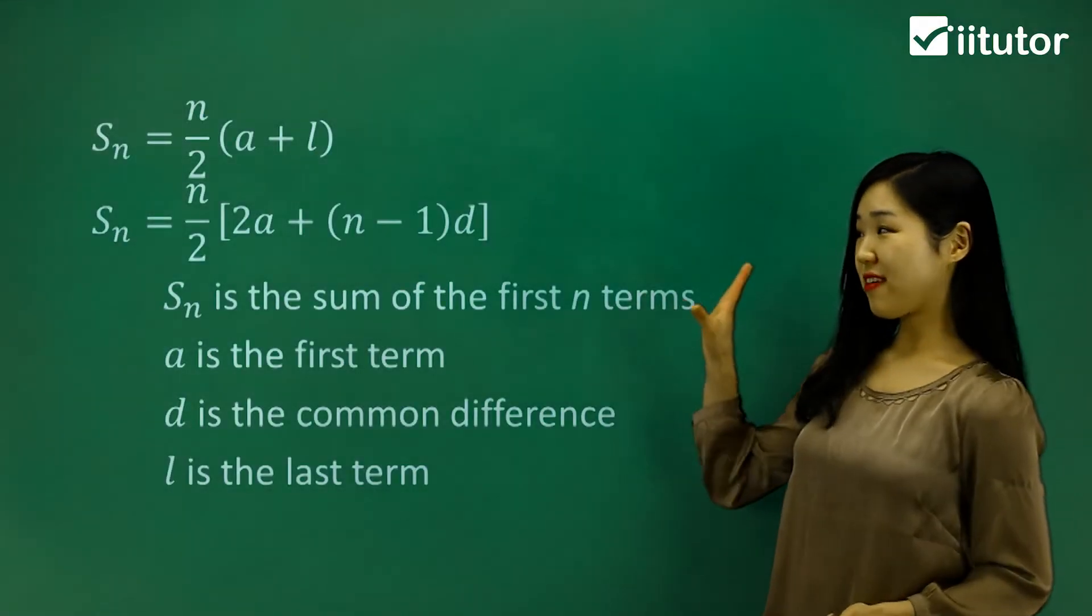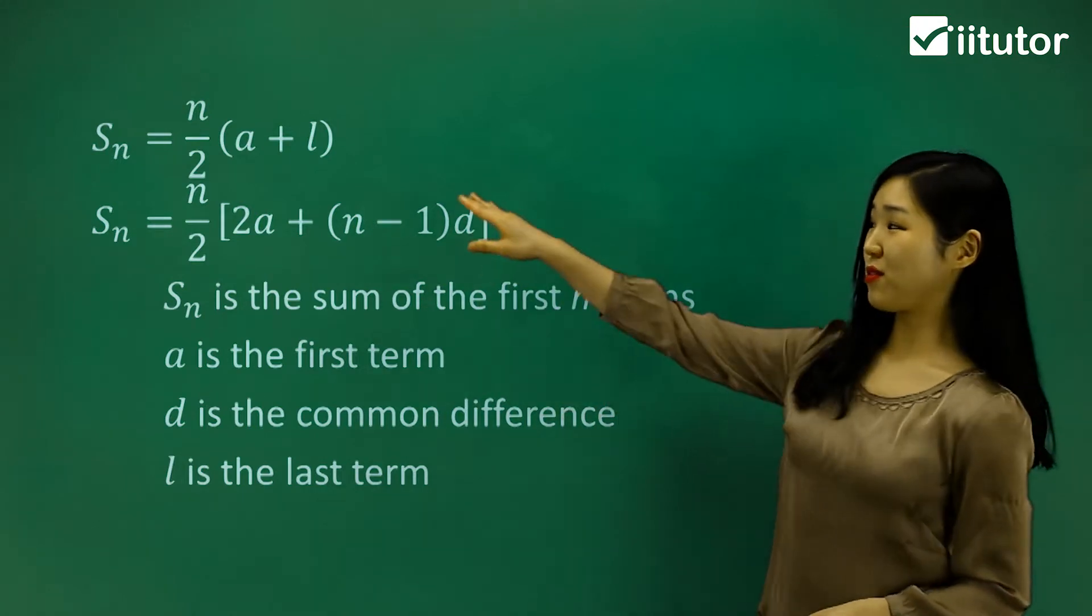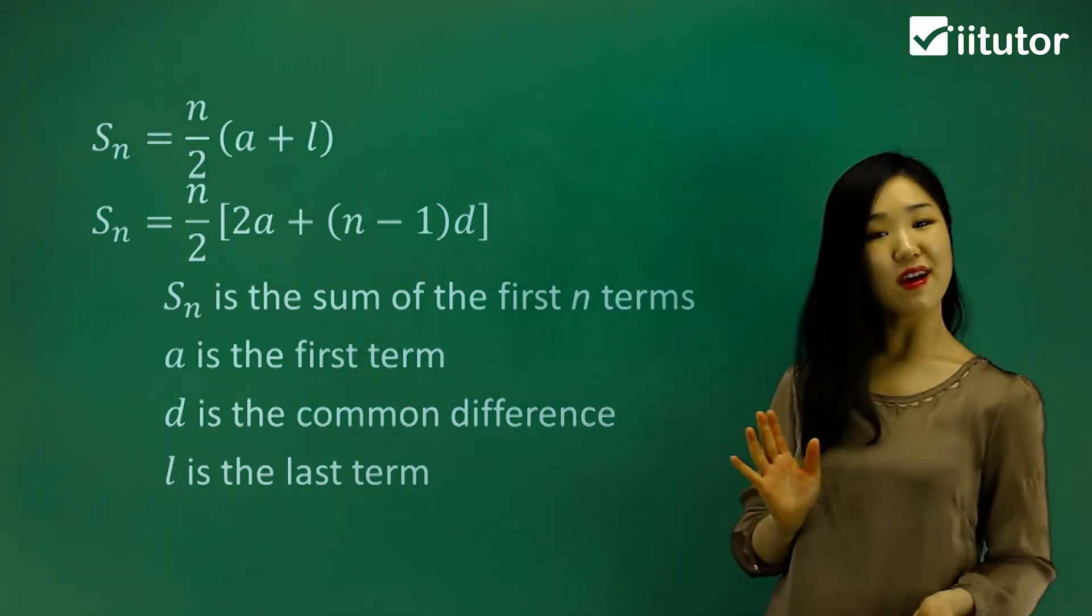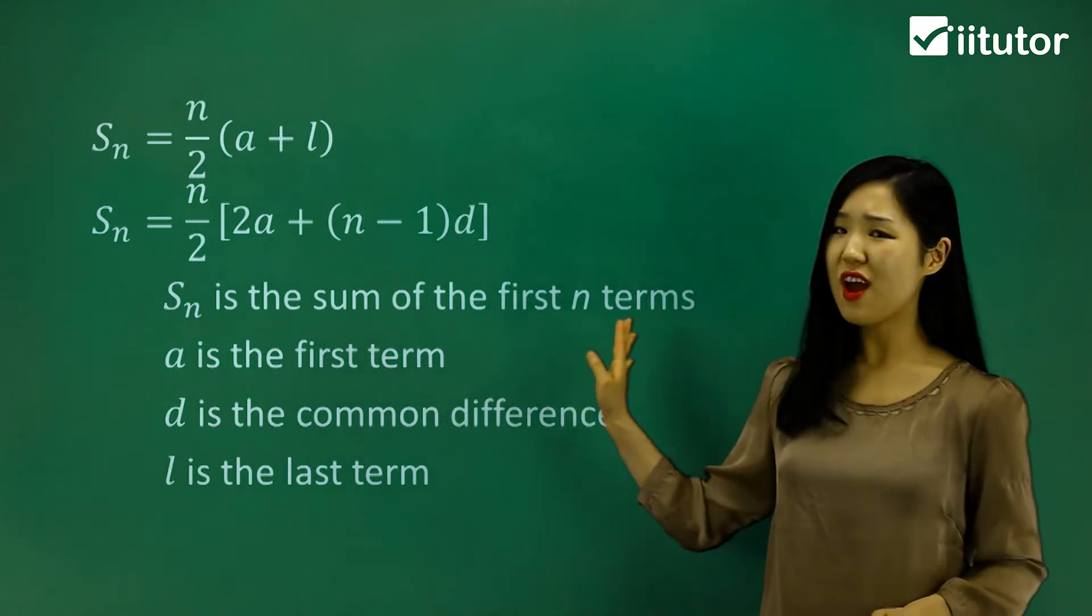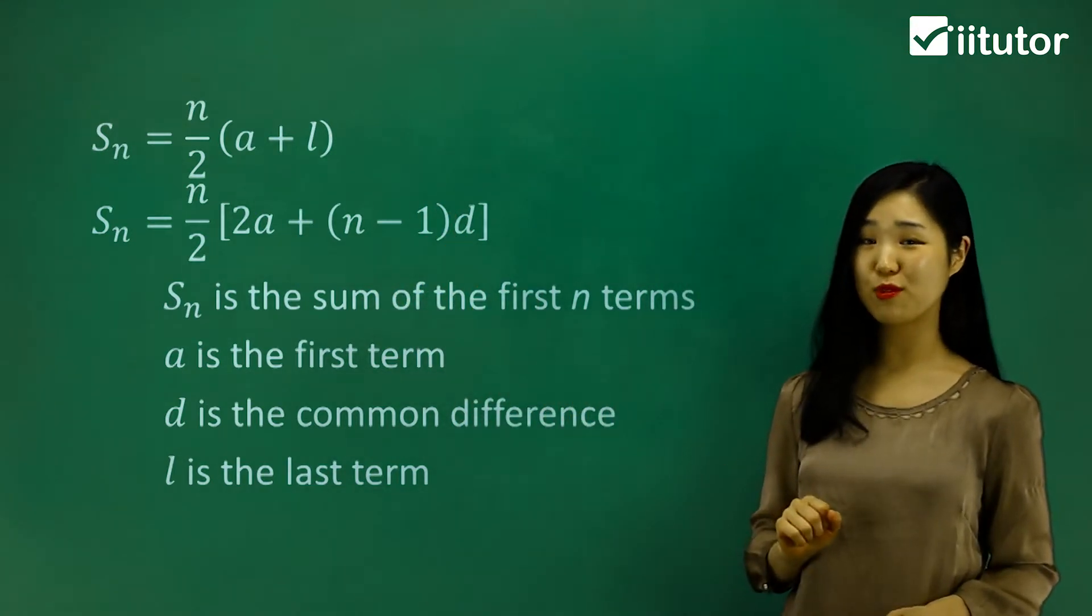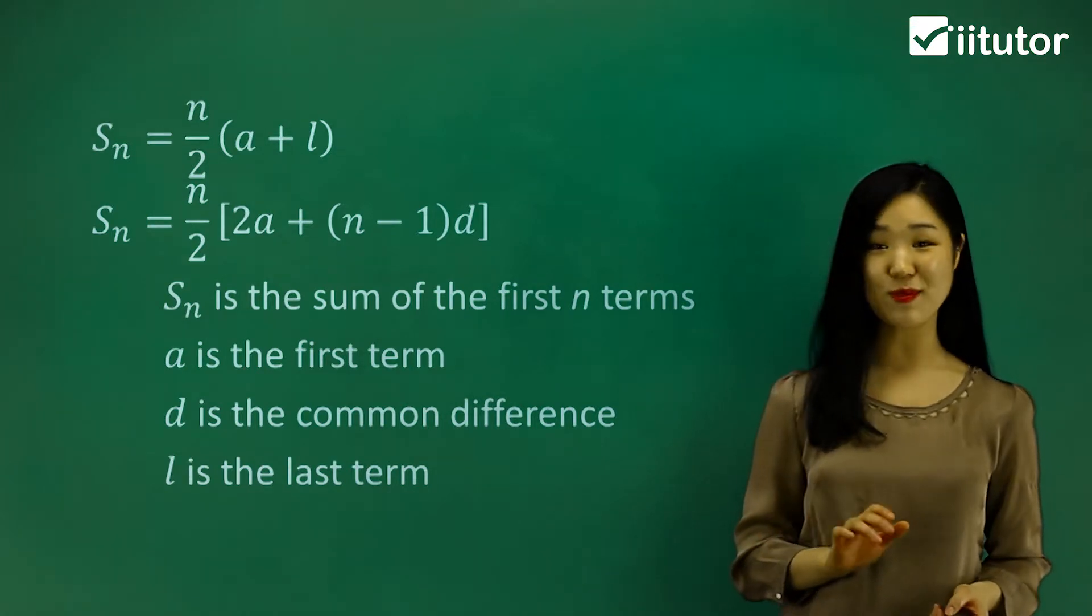Let's continue with using our sum formulas of an arithmetic series. Remember there were two? One where it's n over 2 times a plus l, and the second one was n over 2 times 2a plus n minus 1 times d. Hopefully you know what each pronumeral stands for. We're going to use which one will be more appropriate in answering some questions.